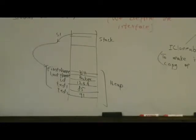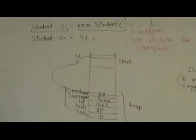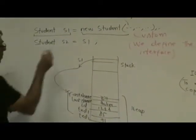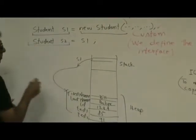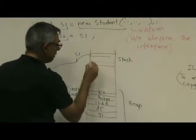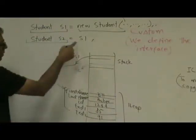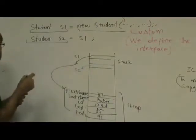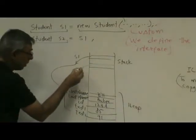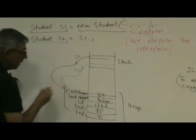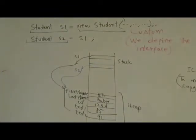Now focus on the second line, student s2 equal to s1. So just, what will the left side do? It will create a reference called s2, right? And now we said s2 is pointing same place as s1 is pointing, so all it does, it points to the same memory. So s2, s1 are really the same object, they are not two different objects, right?